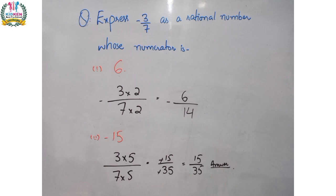The next part asks for the numerator to be minus 15. Again we multiply minus 3 upon 7 by a number that converts the numerator to 15. Since 3 multiplied by 5 equals 15, we multiply both by 5: the numerator becomes minus 15 and 7 multiplied by 5 gives 35. So the solution is minus 15 upon 35.